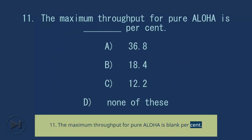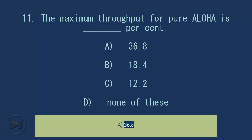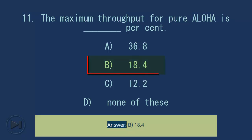Question 11: The maximum throughput for pure Aloha is blank percent. A) 36.8, B) 18.4, C) 12.2, D) None of these. Answer: B) 18.4.